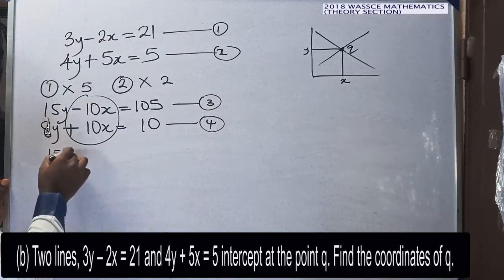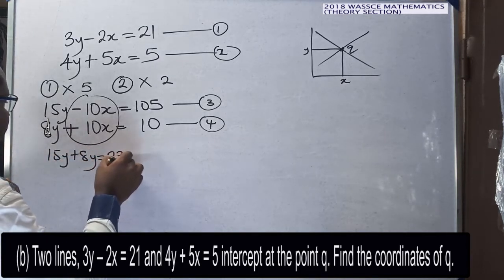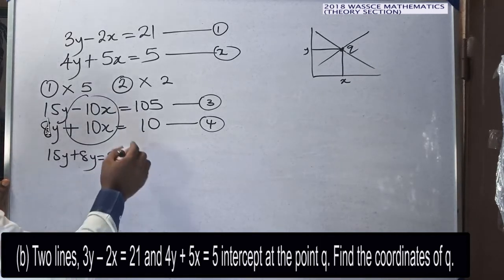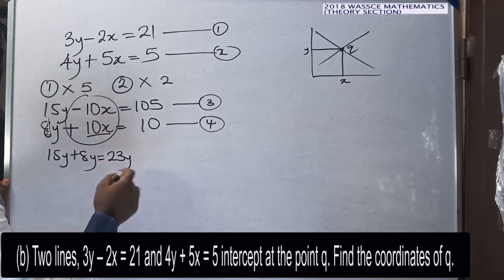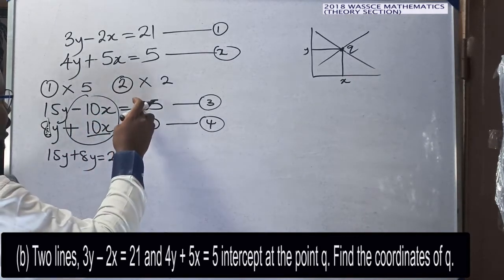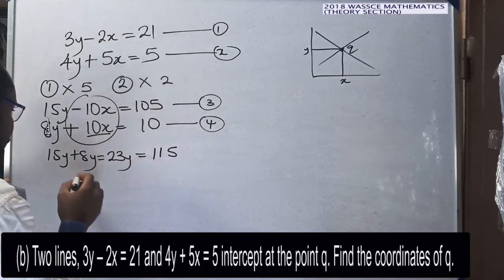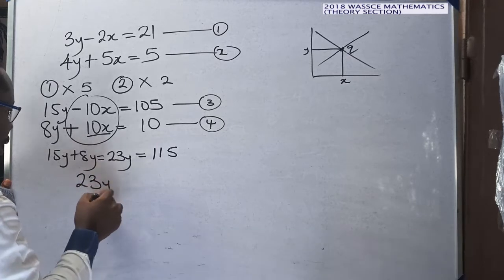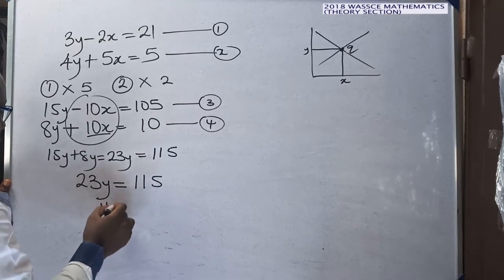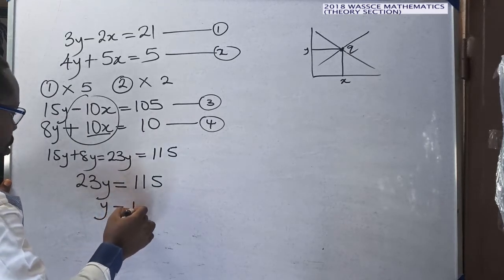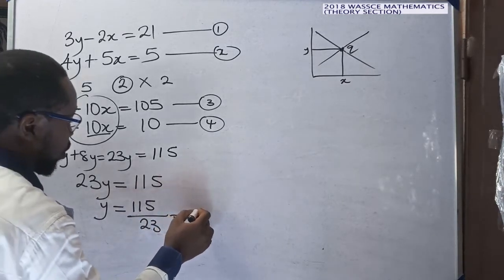Adding equation three and four: 15y plus 8y gives 23y. Then minus 10x plus 10x cancels out. The right-hand sides give 105 plus 10 equals 115. So 23y equals 115, meaning y equals 115 divided by 23, which gives y equals 5.